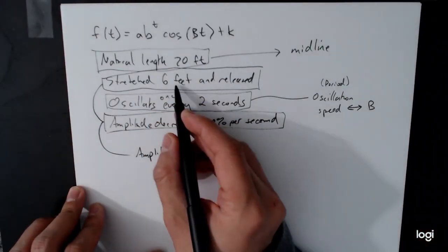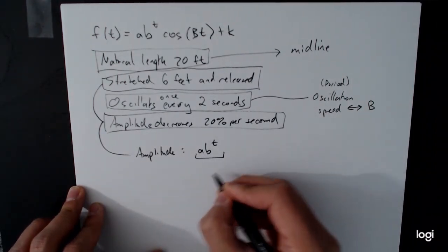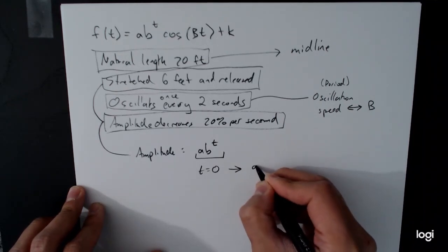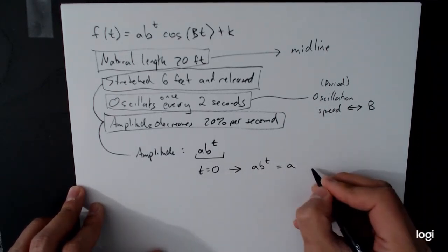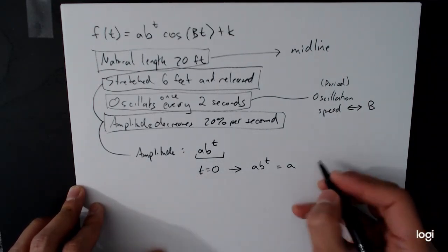So the first thing, stretch 6 feet and released. Well, that's this thing right here. So when t is equal to 0, you know that this thing, a, b to the t is just a. And so that a is going to be 6. That's going to be the amount of stretch that it is at time t equals 0.